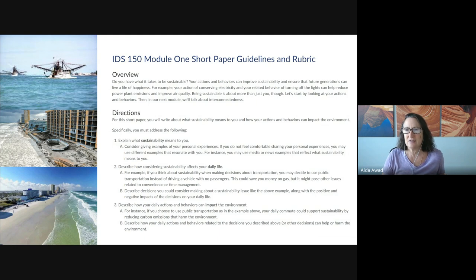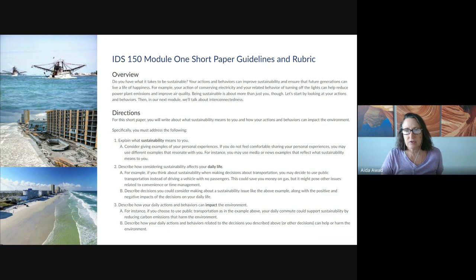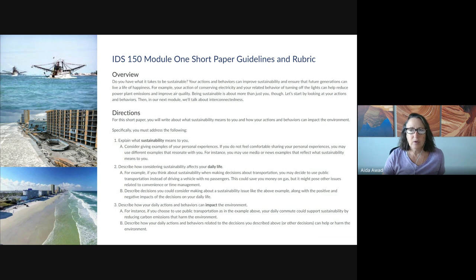The second section asks us to describe how sustainability impacts our daily life. Here you want to ask yourself: what sustainability issues do I consider when I'm making decisions? Perhaps you think about things like biking or walking a short distance versus driving. Maybe you replaced your light bulbs with LED bulbs, or maybe you bought reusable bags to take to the grocery store. What other things might you do in your daily life, and how would those things impact your daily life?